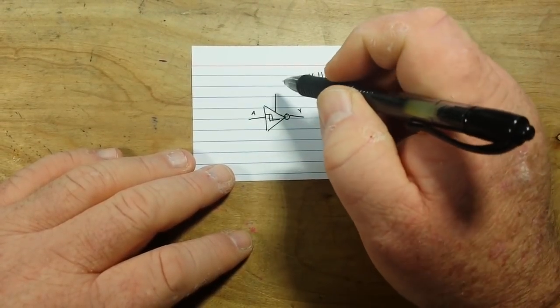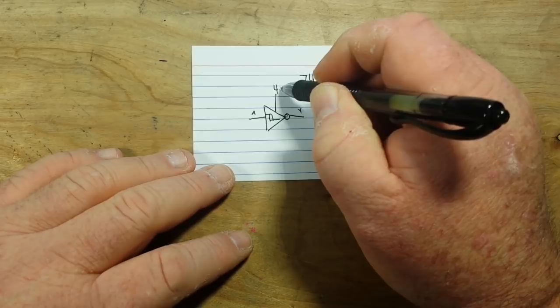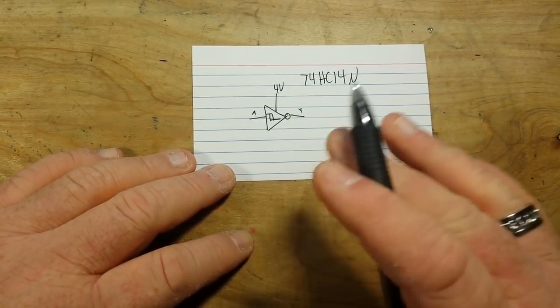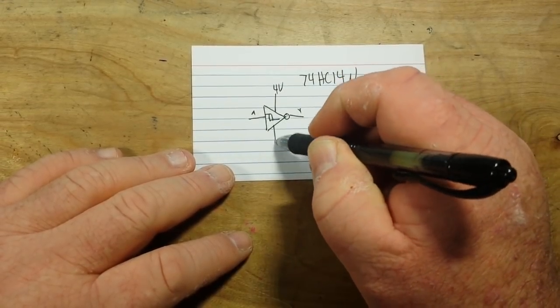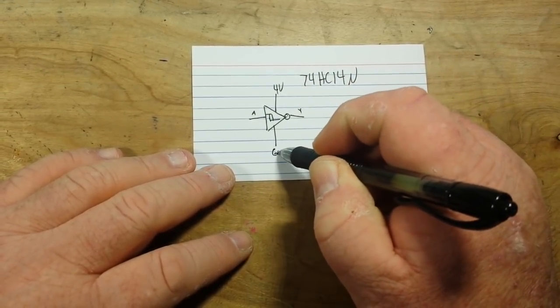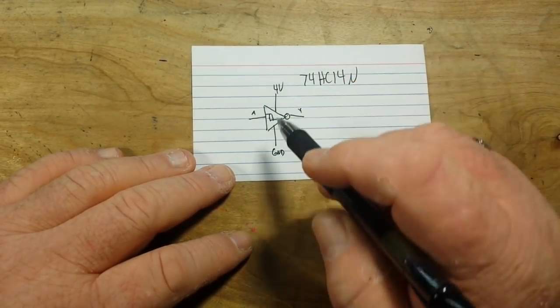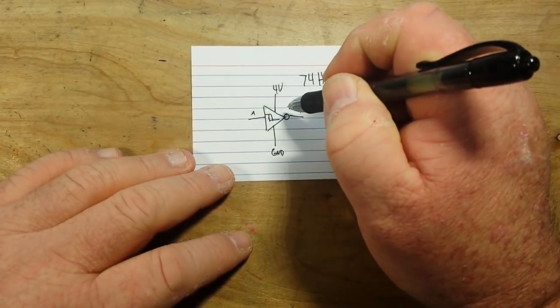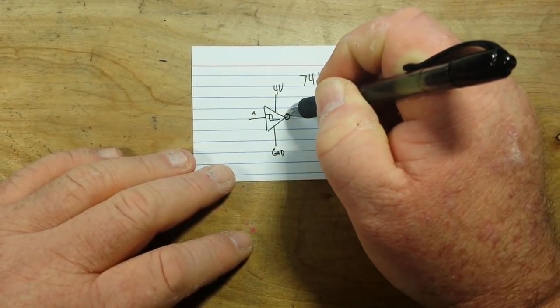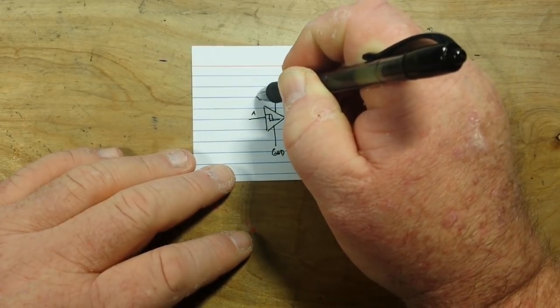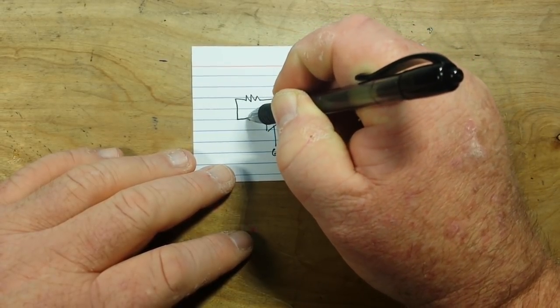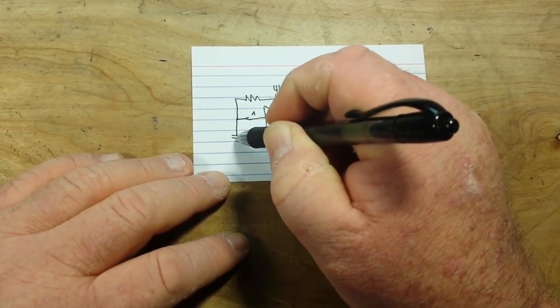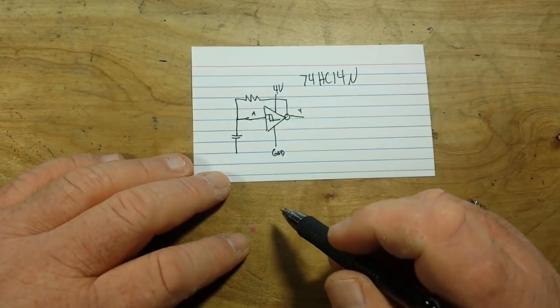Now, we're gonna run it to VCC and in this case, we're gonna give it 4 volts. The 74HC14N is good up to 6 volts, I think. We're gonna do 4 volts. And then, of course, we have ground. Now, what we're gonna do is we're simply gonna create an RC circuit, a resistor capacitor timing circuit. So from the output, we will take a resistor and hook it to the input. And then we will also throw a capacitor to ground.